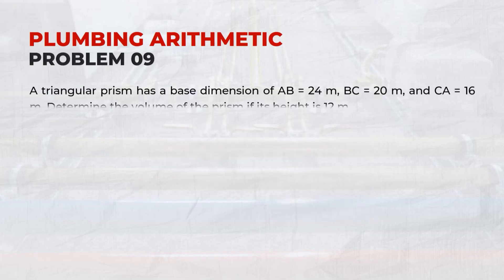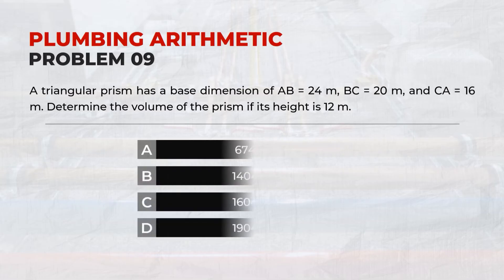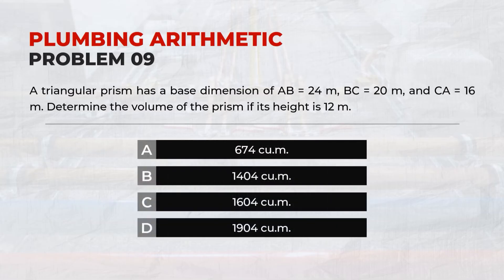A triangular prism has base dimensions AB equal to 24 meters, BC equal to 20 meters, and CA equal to 16 meters. Determine the volume of the prism if its height is 12 meters. Answer: D. 1,904 cubic meters.